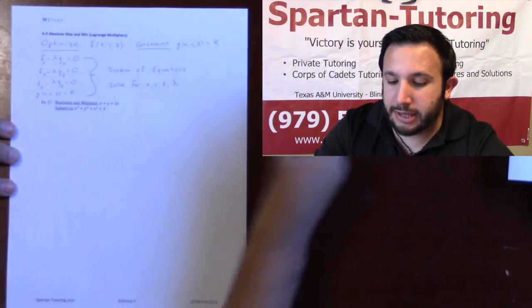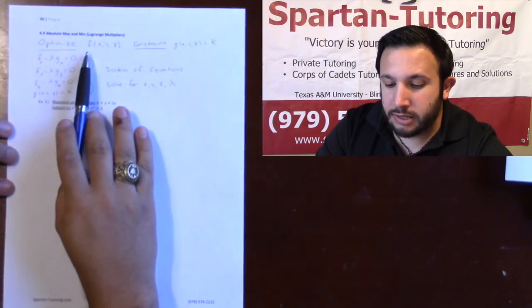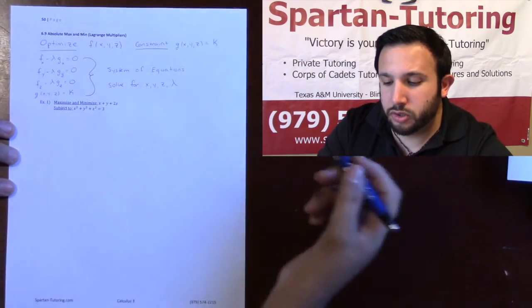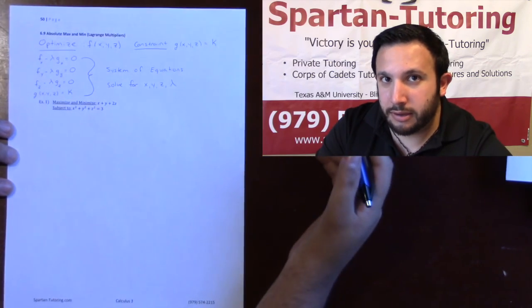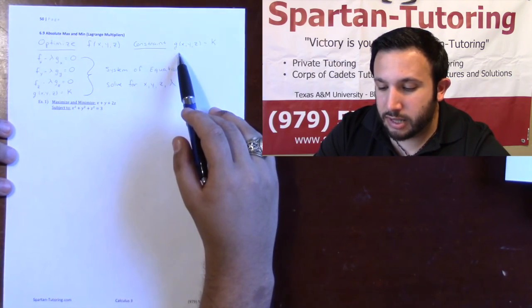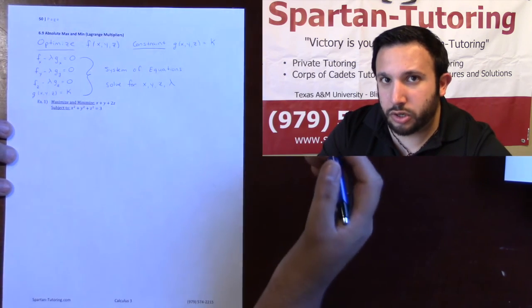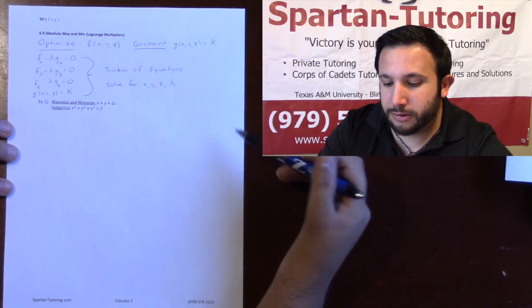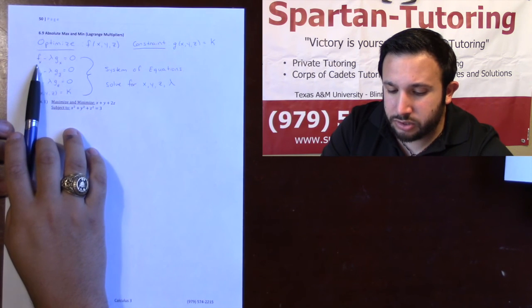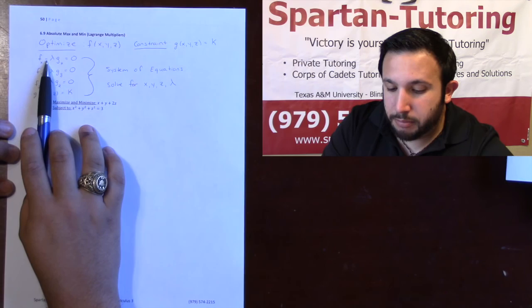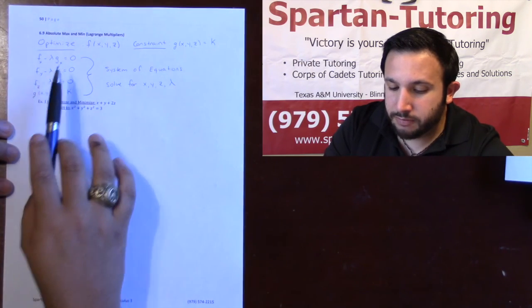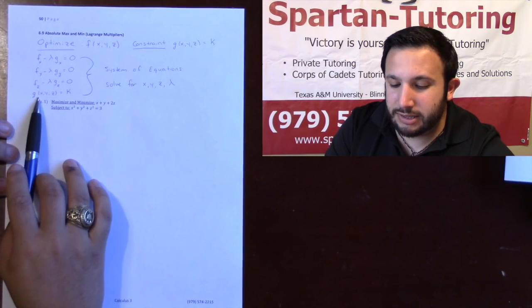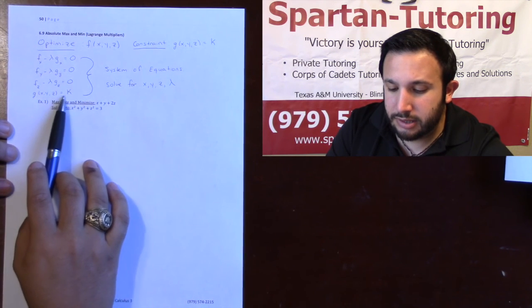What's going to happen is they're going to tell you to optimize — either maximize or minimize — some function f of xyz, and they'll give you a constraint. They'll say 'subject to' and give you a function equal to some constant k. So you want to maximize or minimize this subject to some constraint.